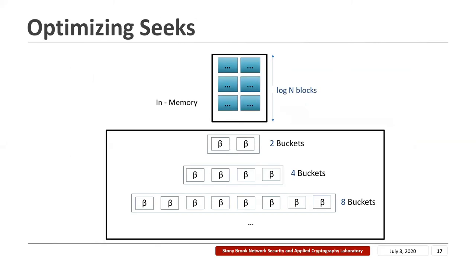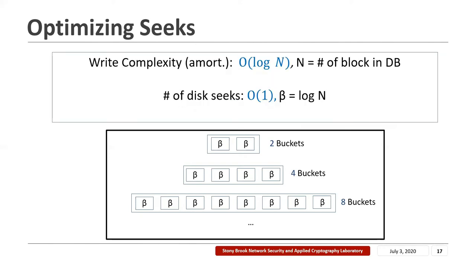If we start with a write queue of capacity log n blocks, and instead of the top level having a capacity of two blocks, it has a capacity of two buckets where each bucket holds up to β blocks, the write complexity remains O(log n) amortized. But the number of disk seeks becomes a constant when β equals log n. So on average for the reshuffles, SQORAM only needs to perform a constant number of disk seeks.